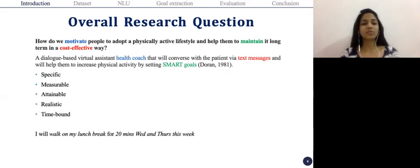So SMART goals stands for specific, measurable, attainable, realistic and time bound. So an example of a SMART goal would be I will walk on my lunch break for 20 minutes Wednesday and Thursday this week. So here we can see a person would know when they're going to act on their activity or their goal, and also know when they have achieved that particular goal. And this has shown to be more successful as compared to a vague goal. For example, I will try to work more this week.